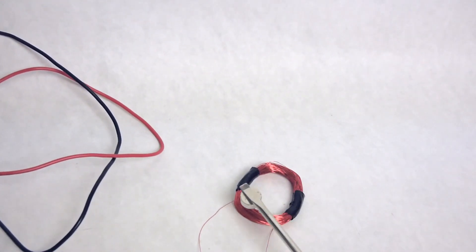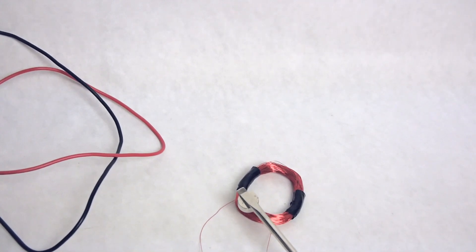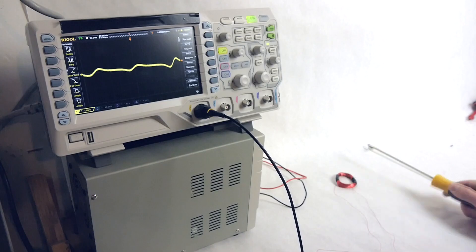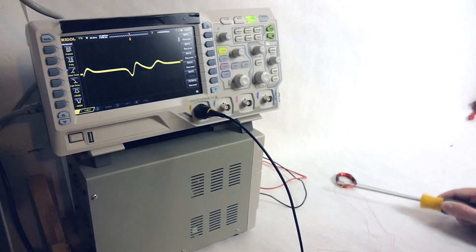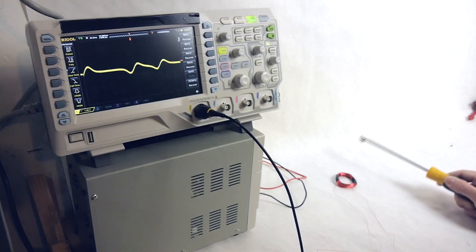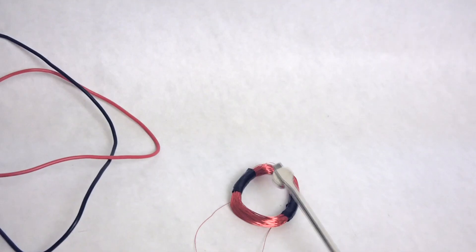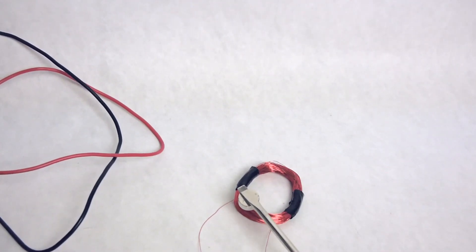I've got a magnet and a conductor, in this case a coil of wire. The conductor is connected to a new toy in the shop, an oscilloscope, which is an instrument for measuring changing voltage and displaying it on a screen. For example, here's a typical AC sine wave, similar to what you measure at a wall outlet.